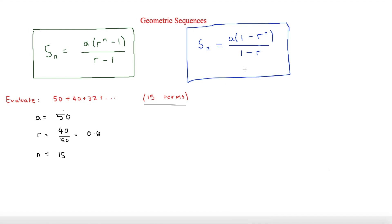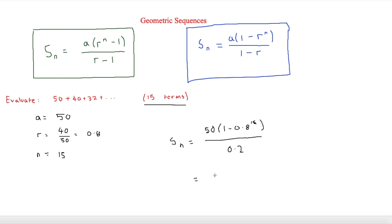Since r is less than 1, it makes sense to use the second formula S_n = a(1 − r^n) / (1 − r) to avoid dividing by a negative number. Substituting: S_n = 50 × (1 − 0.8^15) / (1 − 0.8) = 50 × (1 − 0.8^15) / 0.2. Putting this into the calculator gives 241 to three significant figures.